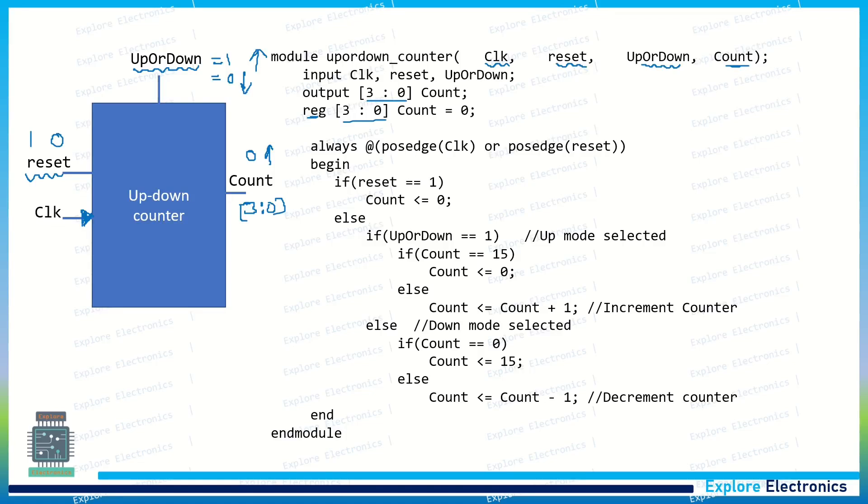Count will be initialized to 0. Always at positive edge of the clock or positive edge of the reset, it means it is an asynchronous reset. Asynchronous reset means clock and reset are not in sync. They are asynchronous to each other. Whenever the reset happens, when reset is equal to 1, the counter will reset to 0. It will not wait for the positive edge of the clock to happen.